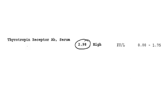Here we see an example of a thyrotropin receptor antibody result. This person is elevated at 2.98, and the lab uses a range of 0 to 1.75 IUs per liter.